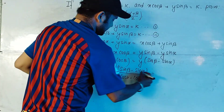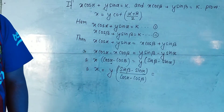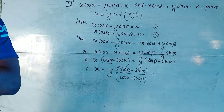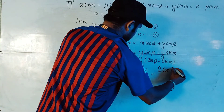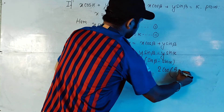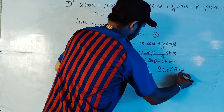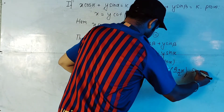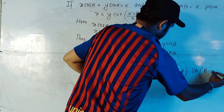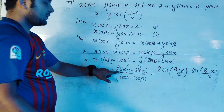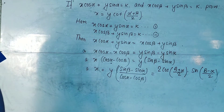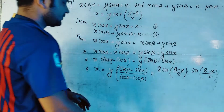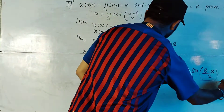Now we apply the formula for sin C − sin D in the numerator. The formula gives 2·cos((β + α)/2)·sin((β − α)/2) in the numerator. We also apply the formula for cos C − cos D in the denominator.